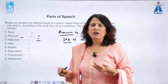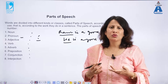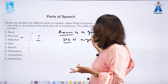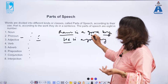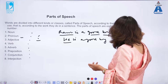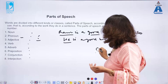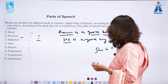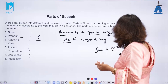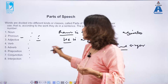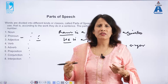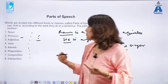An adjective is a part of speech used to tell the quality of a noun or pronoun. In 'Ram is a good boy,' 'good' is an adjective. In 'She is a bad singer,' 'bad' is an adjective. We use adjectives carefully because changing them automatically changes the meaning of the sentence.